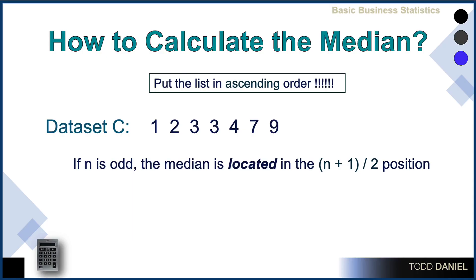Let's look at this data set. This data set has an odd number of scores, and I've already arranged data set C in ascending order. If the number of scores in your data set is odd, the median is located at the (n + 1) / 2 position — that's the middle score. With 7 scores, that's (7 + 1) / 2 = 4, so the 4th score is the median for data set C.